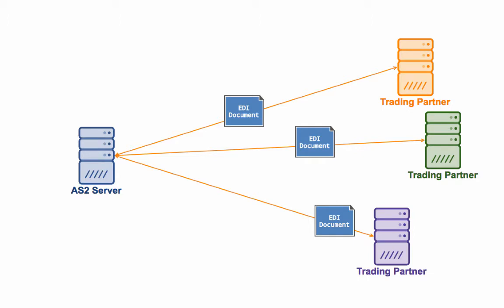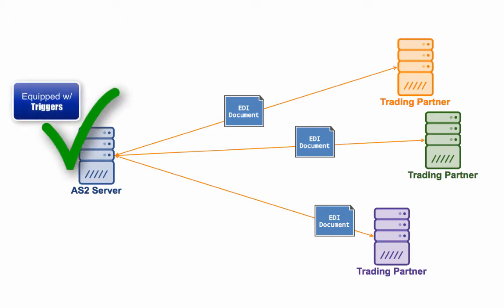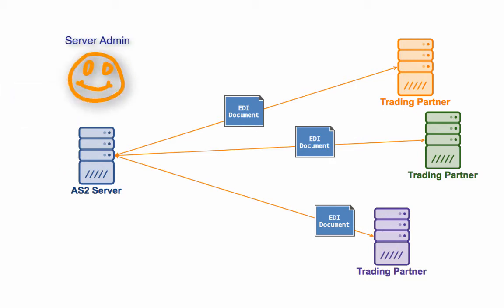Jscape MFT server already comes with a powerful automation feature called Triggers. Triggers enables admins to automate a variety of business processes, making it the perfect solution for carrying out AS2 EDI transactions. The first step is to set up HTTP or HTTPS. AS2 runs over HTTP or HTTPS, so before you start configuring any AS2 settings, you'll need to have an HTTP or HTTPS service up and running on your server.